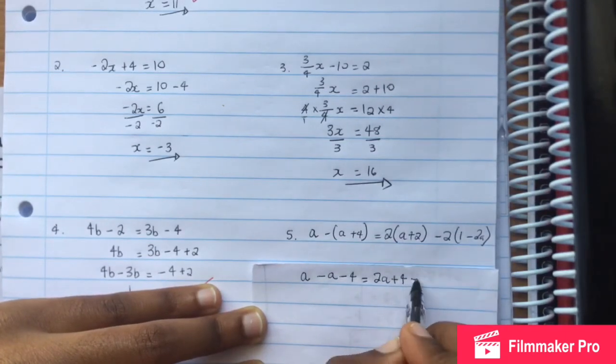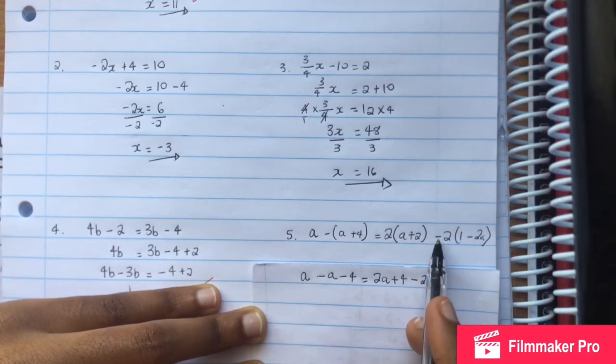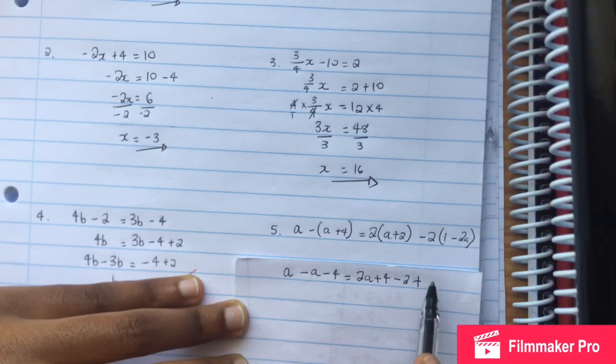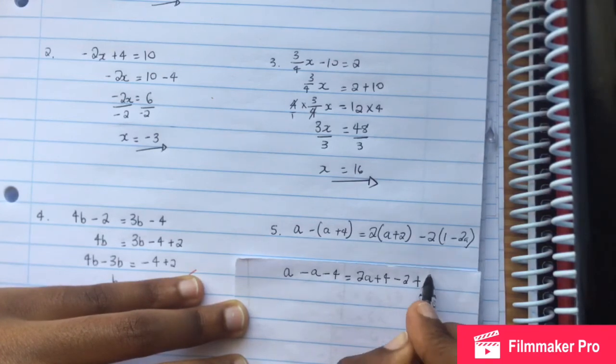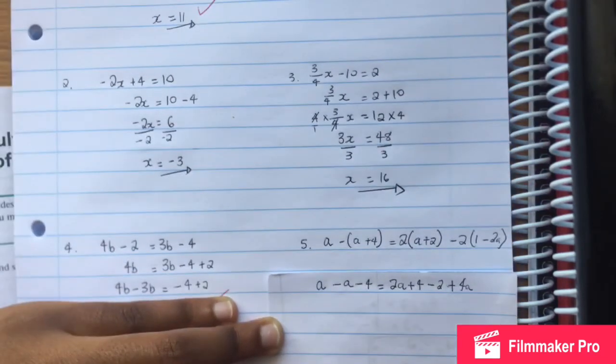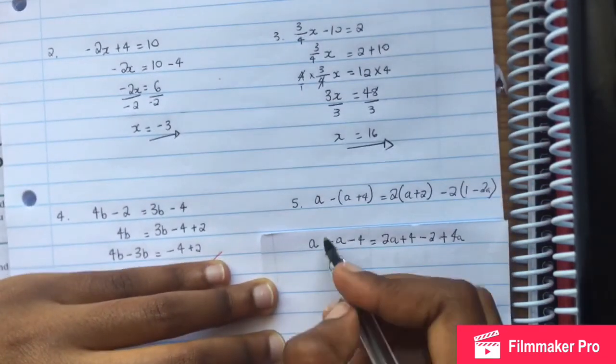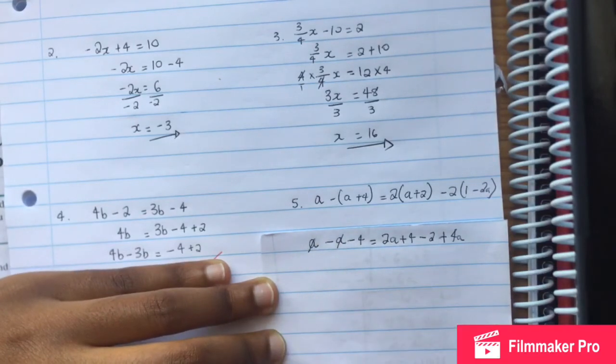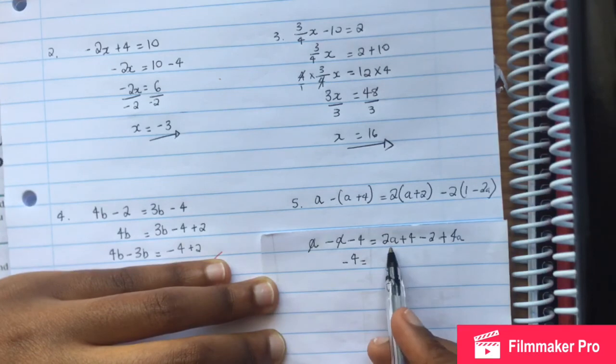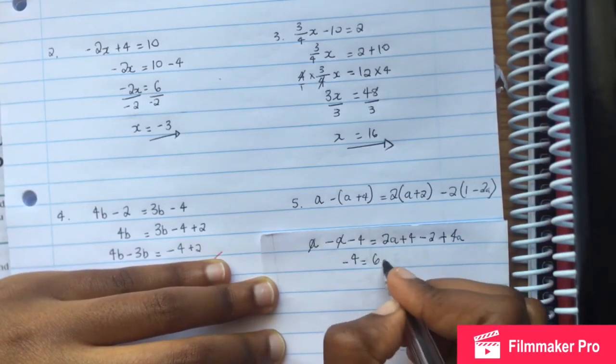Then is equal to 2 times a is 2a. 2 times 2 is 4. Negative 2 times 1 is negative 2. Negative times negative is positive. And then 2 times 2a, 2 times 2a is 4a.